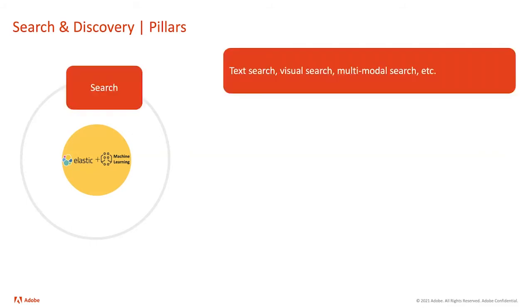In order to power our vision, we have four different pillars. The first one is, of course, search — not just text search like Google is known for, but at Adobe we also do visual search: given an image, find similar images, or different modalities of search combining text, audio, video, and images.